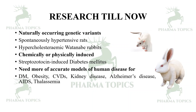We need better models for diverse research in diabetes mellitus, obesity, cardiovascular diseases, kidney disease, Alzheimer's disease, AIDS, thalassemia, and so on. The solution is the usage of transgenic animals, which has evolved significantly. So what are transgenic animals, how are they produced, and how are they useful in target discovery?